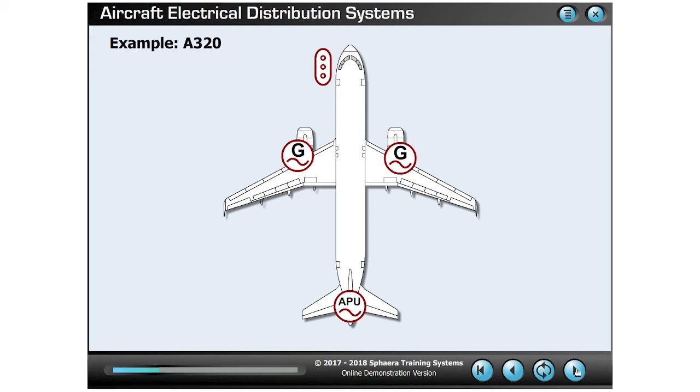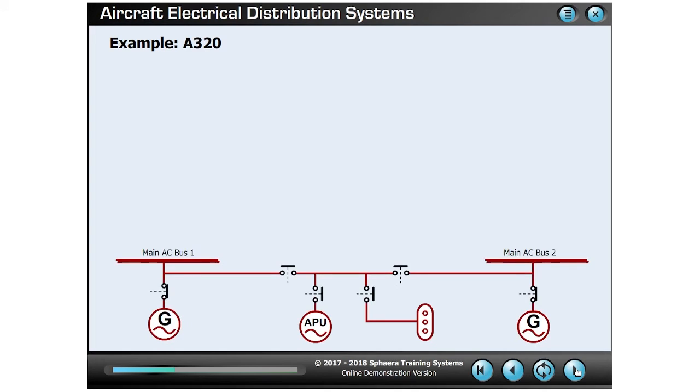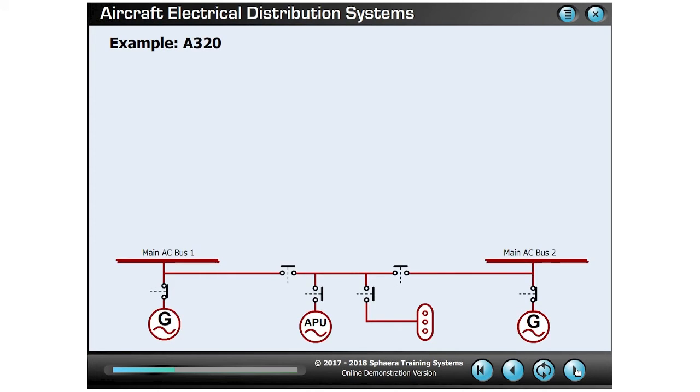If we now switch to a schematic view, we see that each of these power sources can be interconnected by a system of generator control breakers and bus tie breakers. This means that any of the four power sources can provide power to any of the two main AC busbars.